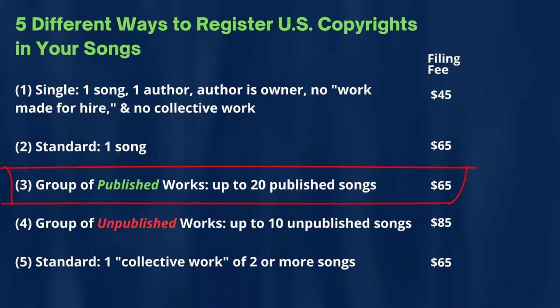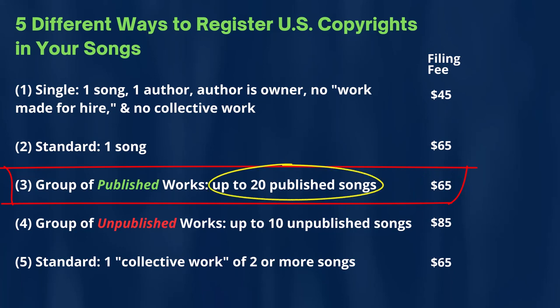For this particular approach, number three, you can include up to 20 published songs. The current U.S. governmental filing fee is $65 for approach number three. These would be up to 20 published songs — that's an important distinction to keep in mind. They're published songs.